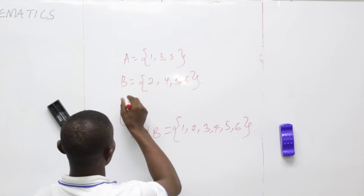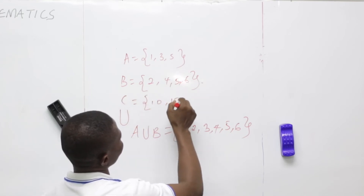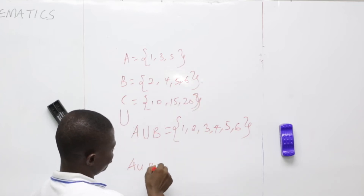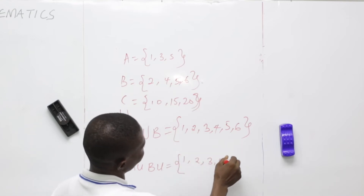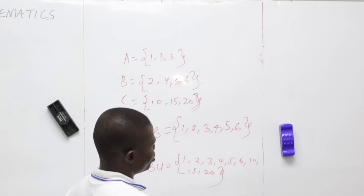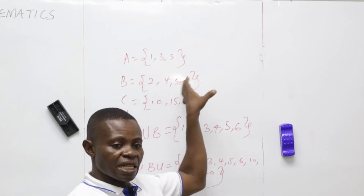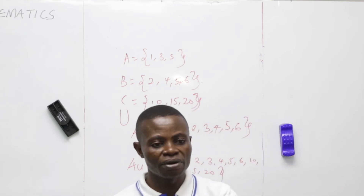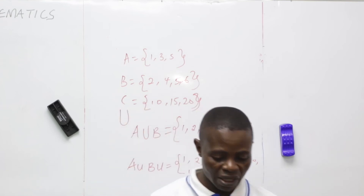Because I'm saying two or more sets — if I have set C = 10, 15, 20, then A union B union C will be: 1, 2, 3, 4, 5, 6, 10, 15, 20. You cannot involve any number not contained in the sets given. You follow the elements given to you while you combine your sets.